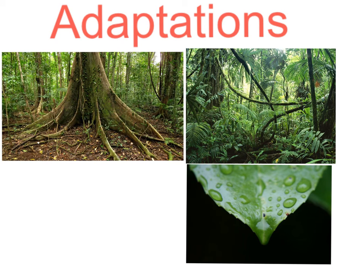These are some adaptations in a rainforest. We have spoken already about the buttress roots, which make sure the tree gets nutrients from above the thin soil. This is a drip tip, so all the water that flows onto the leaf drips off instead of weighing it down. Here we can see the lianas in the forest making the undergrowth very dense.